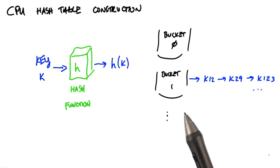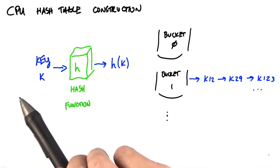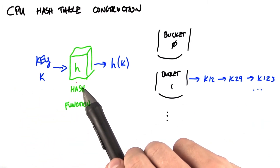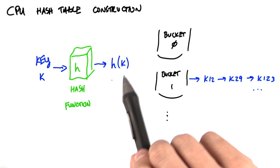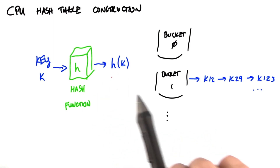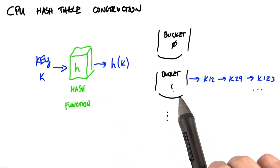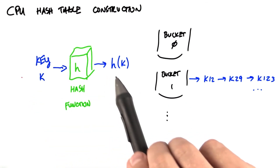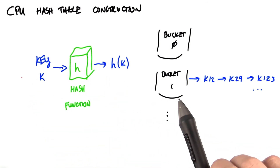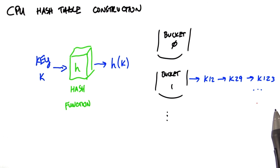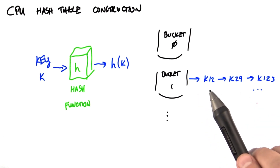Then when we want to look up a key, we take that key and run it through the hash function to get a particular value. That's going to refer us to a particular bucket. So we have this key, it's going to return — it's in bucket 1. Then we will look through all these chained items to find the key that we're looking for.